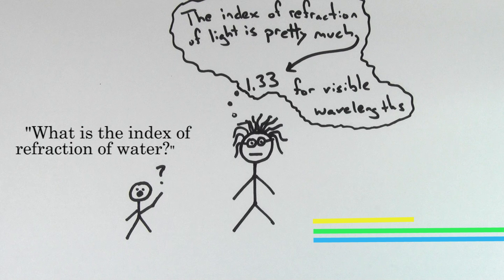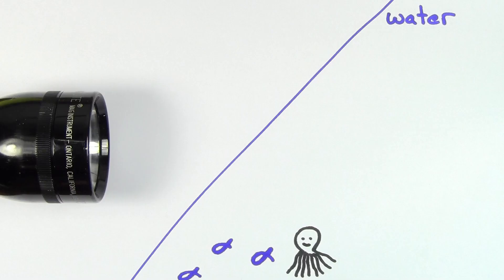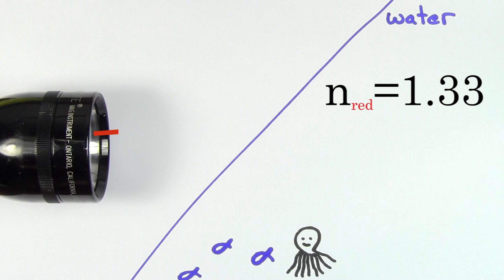However, each visible wavelength has a slightly different index of refraction in water. The index of refraction of red light in water is about 1.33, but the index of refraction of blue light is closer to about 1.34.